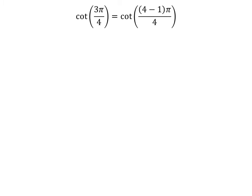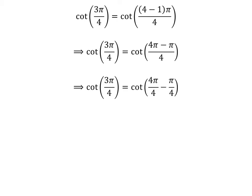We know 4 minus 1 is equal to 3, so cotangent of 3 times pi upon 4 is equal to cotangent of 4 minus 1 times pi upon 4. Expanding the numerator, we get cotangent of 4 times pi minus pi upon 4. The fraction 3 times pi upon 4 can be expressed as the difference of two fractions: 4 times pi upon 4 and pi upon 4. Cancelling the common factor gives us cotangent of pi minus pi upon 4.